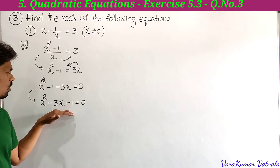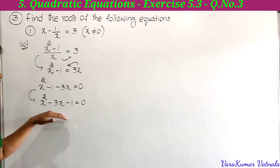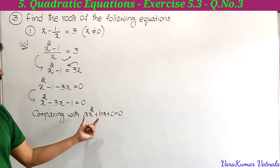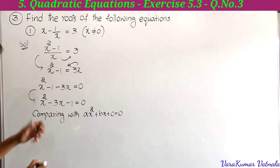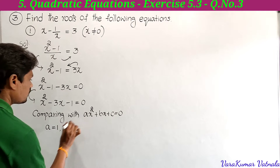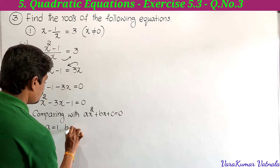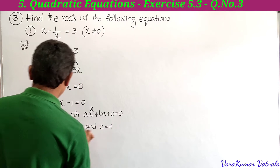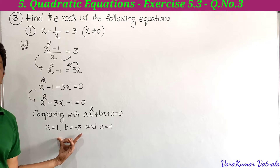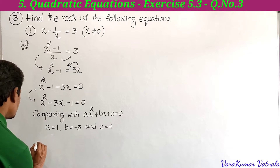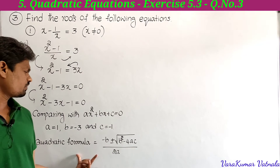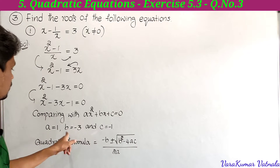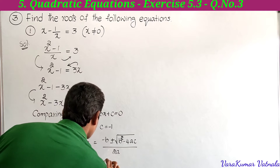We will use the quadratic formula to find the roots. Comparing x squared minus 3x minus 1 equal to 0 with ax squared plus bx plus c equal to 0, we get a is equal to 1, b is equal to minus 3, and c is equal to minus 1. The quadratic formula is: x equals minus b plus or minus square root of b squared minus 4ac, divided by 2a.